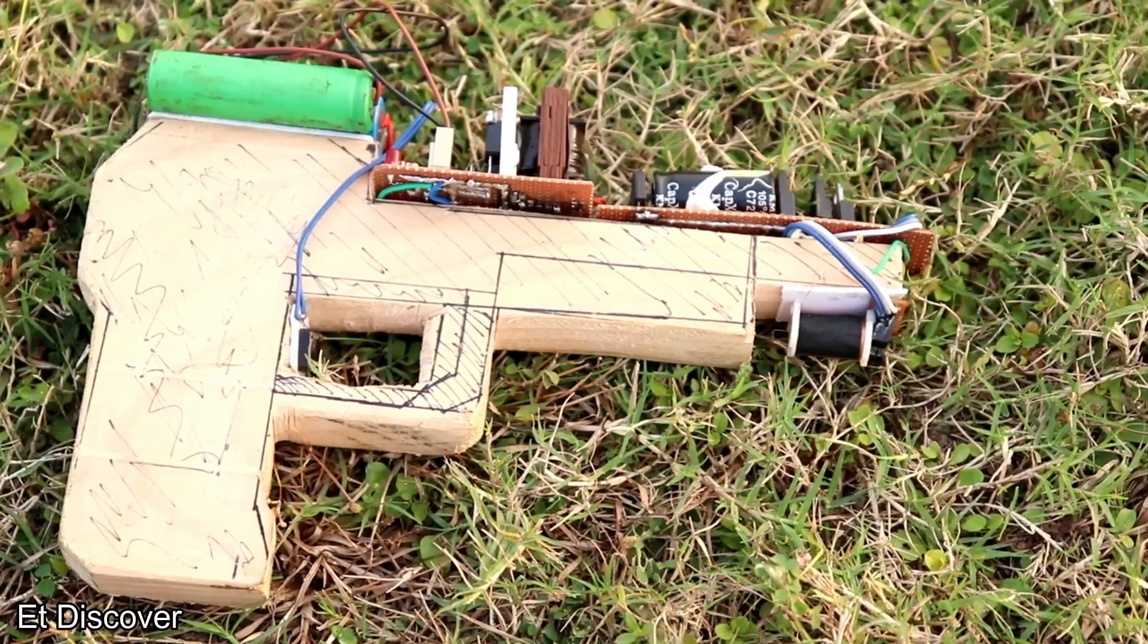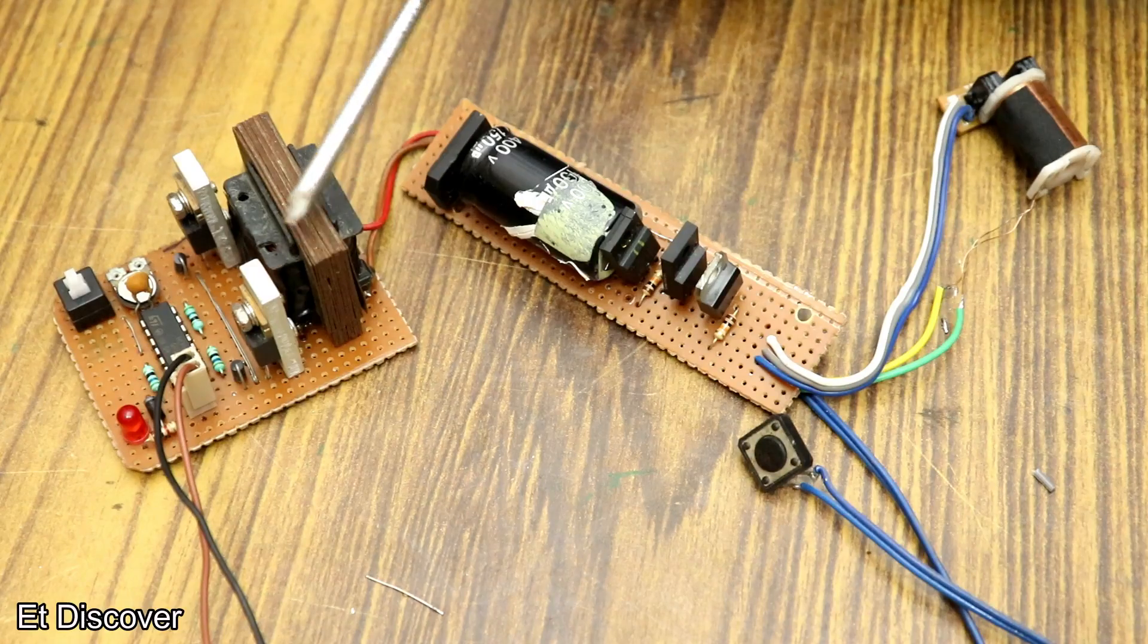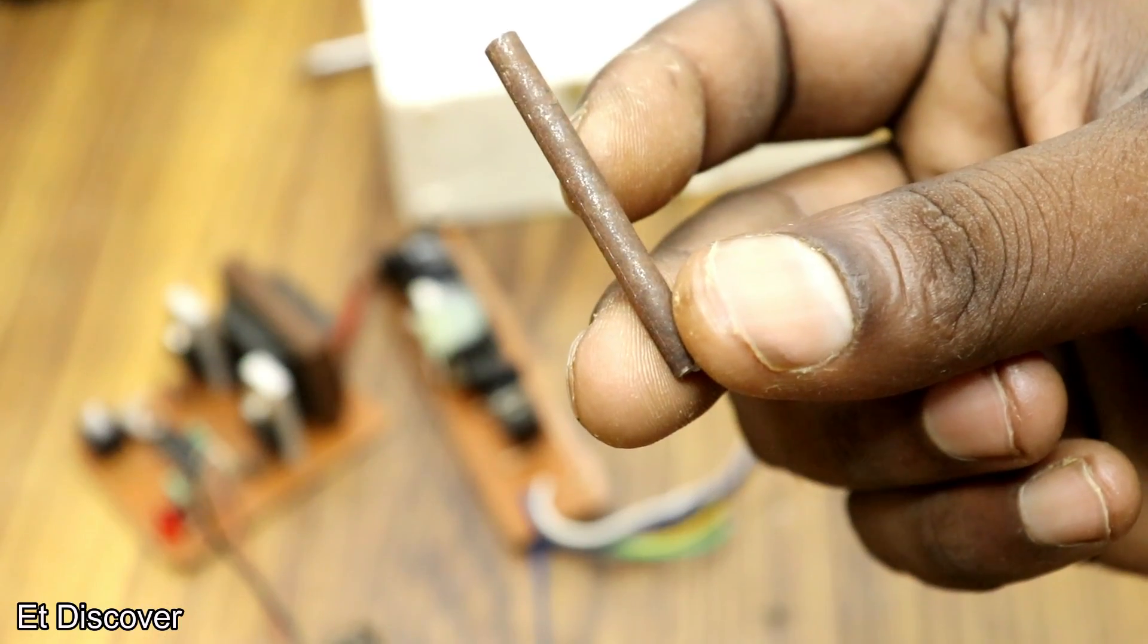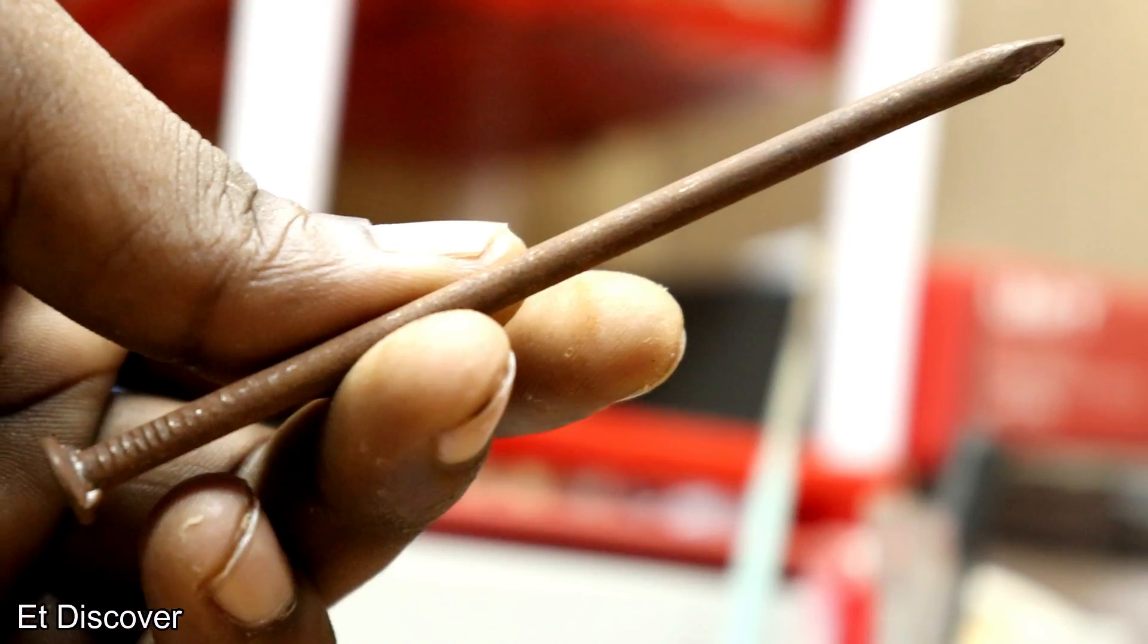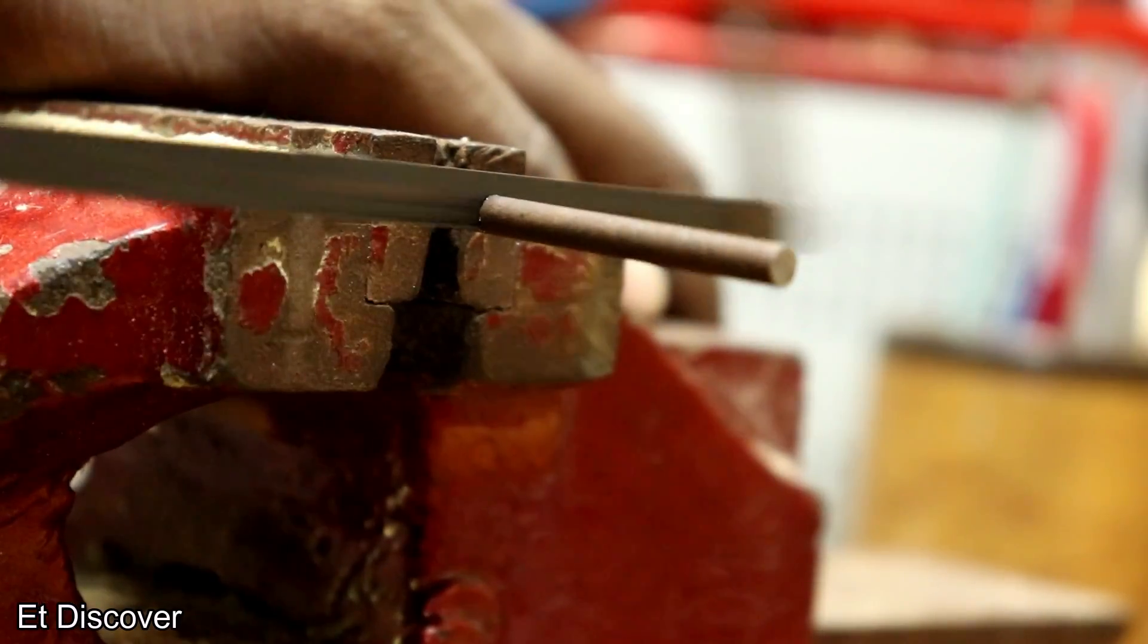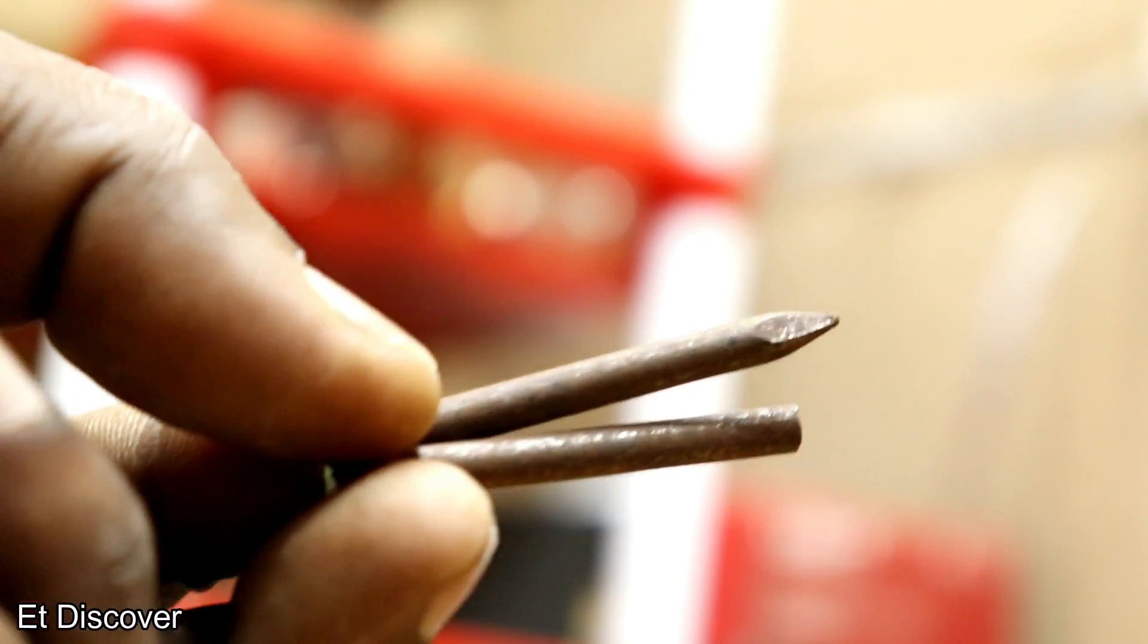Once everything is set to the right place, let's check it. I need some bullets for my gun. That's why I use a big nail and cut it in two pieces. Now my bullet is ready.